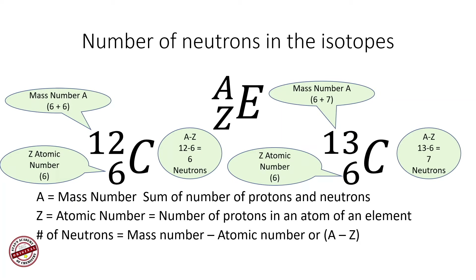For carbon-12, the mass number is 12 because it has 6 protons and 6 neutrons. When you calculate the number of neutrons: mass number minus atomic number is 12 minus 6, which gives you 6. For carbon-13, the mass number is 13 because it has 6 protons and 7 neutrons, so the number of neutrons will be 7. We can calculate the number of neutrons in an isotope using this method.